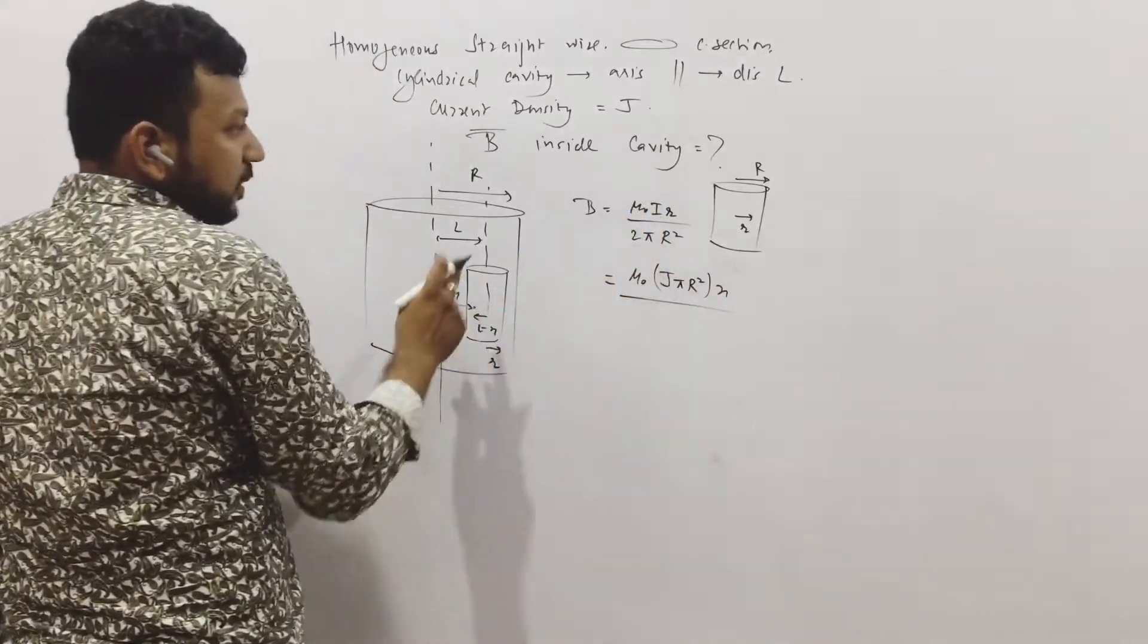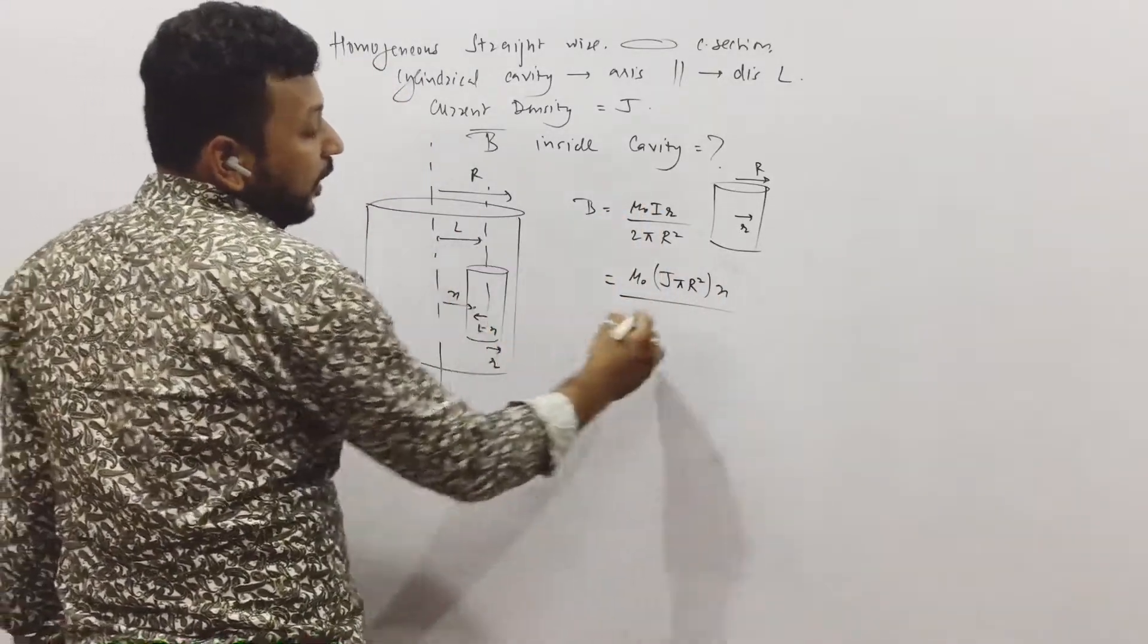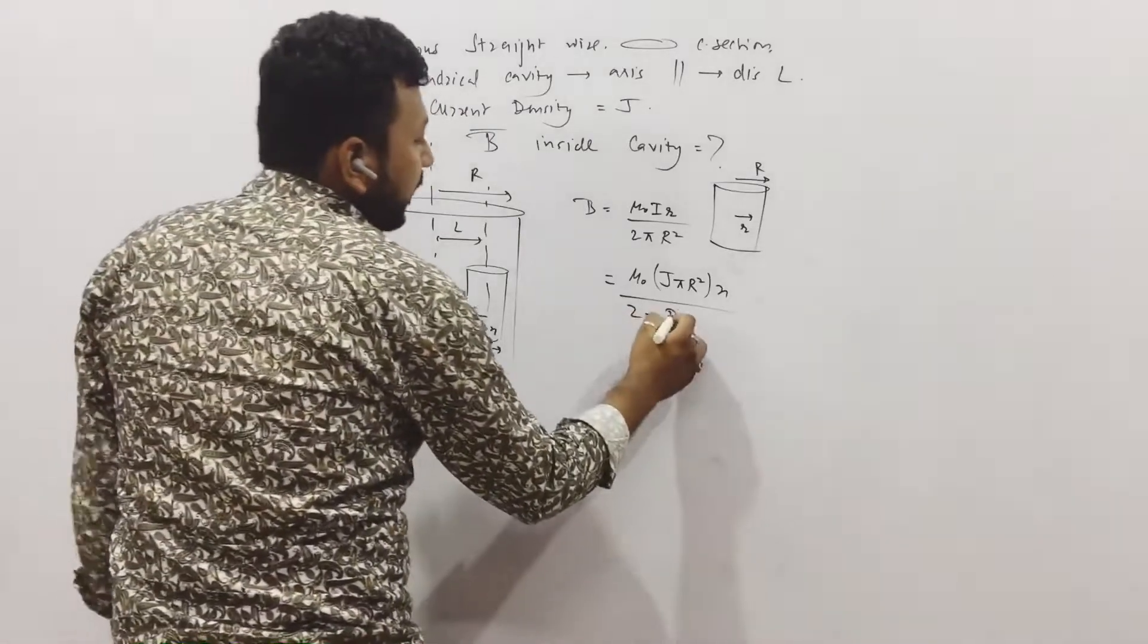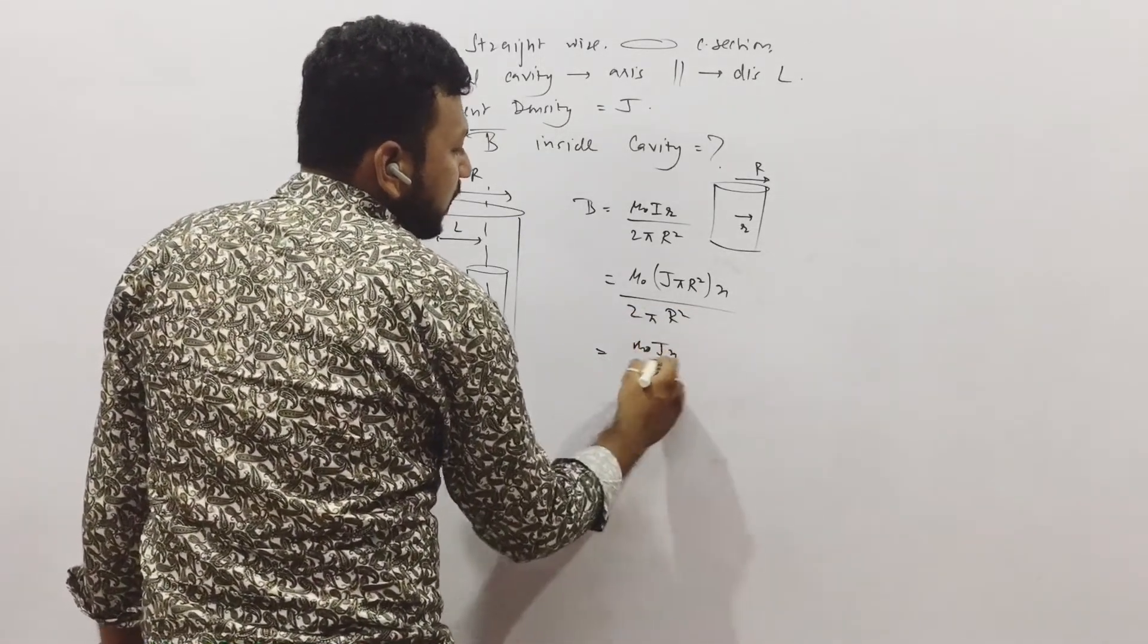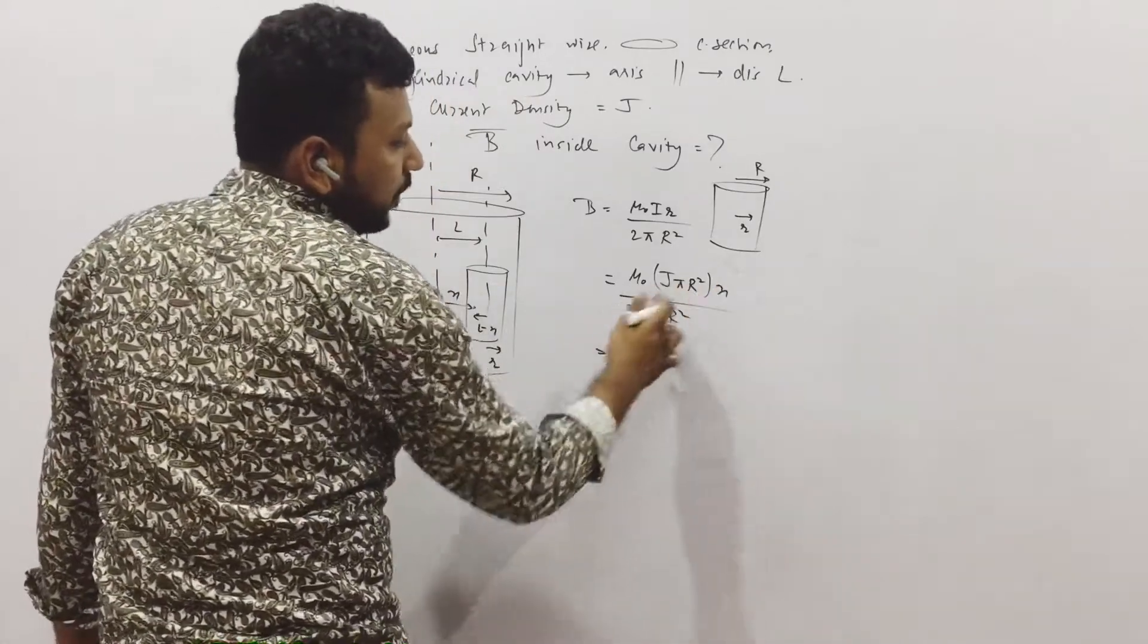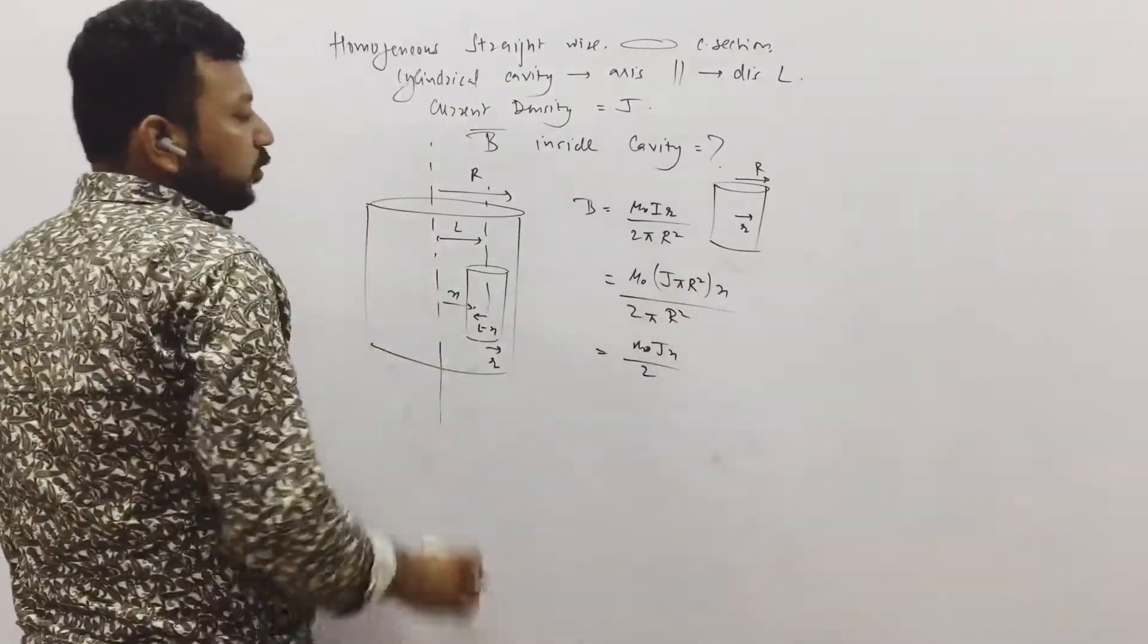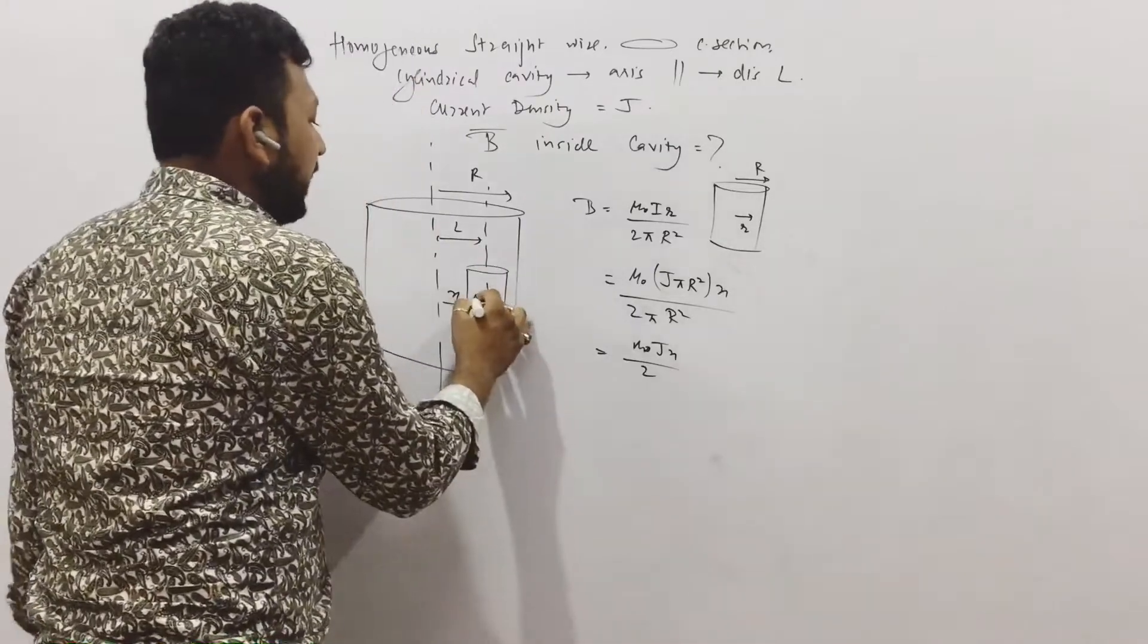The total current is J into pi r square upon 2 pi r square. That means it is mu naught Jx upon 2. That's it, right? This is the magnitude of the whole cylinder at the point A.